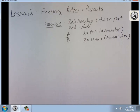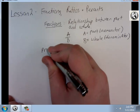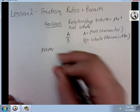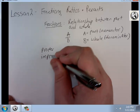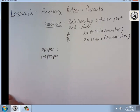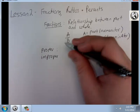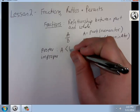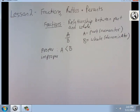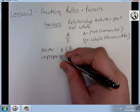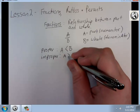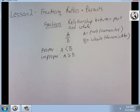So, two basic types of fractions. We have proper and improper. A proper fraction is where A is less than B. The part has to be less than the whole to be proper. An improper fraction is where A is greater than or equal to B. The line under the greater than sign means greater than or equal to.